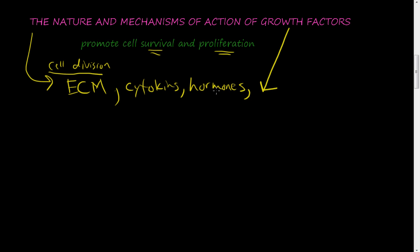These four ECM, cytokines, hormones, and growth factors can stimulate the cell to divide. Growth factor usually causes increase in size, causes mitosis to happen, and they prevent apoptosis.